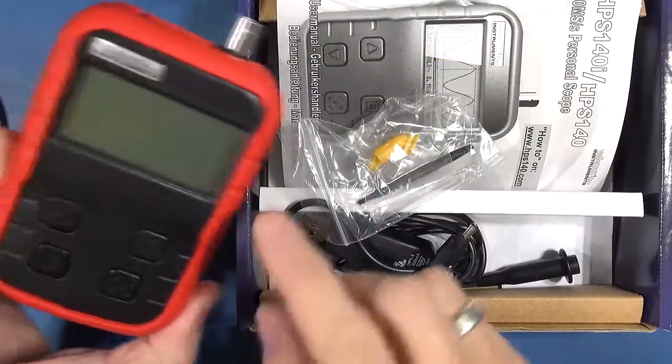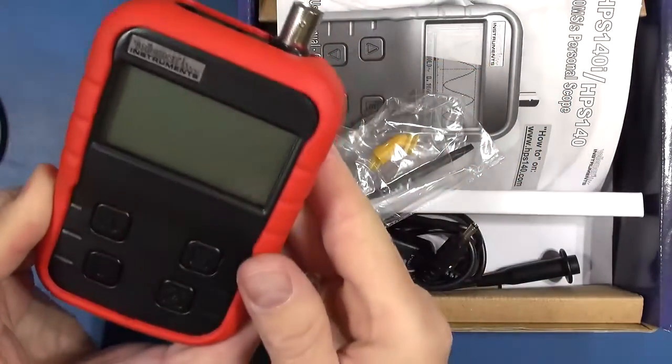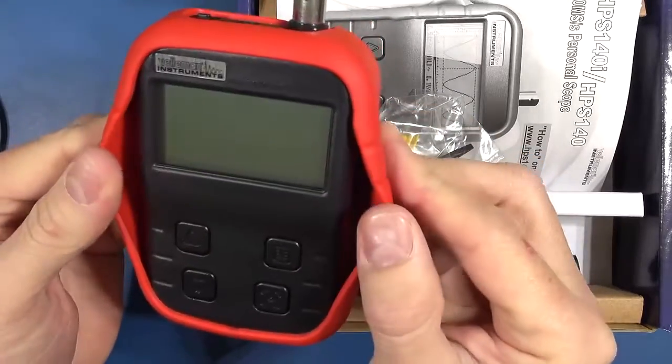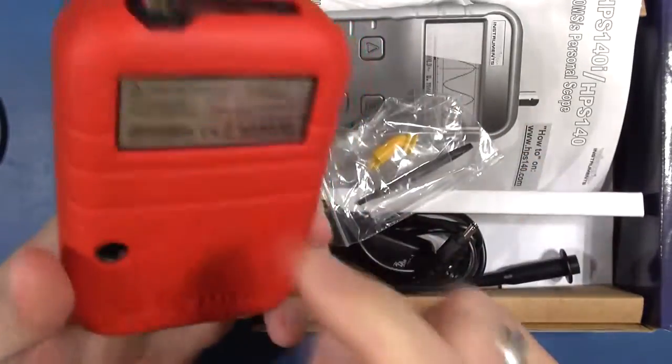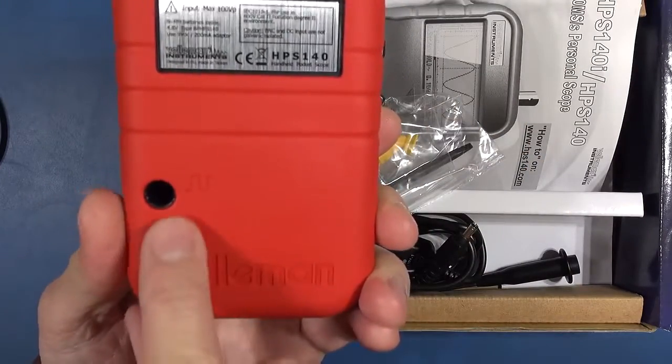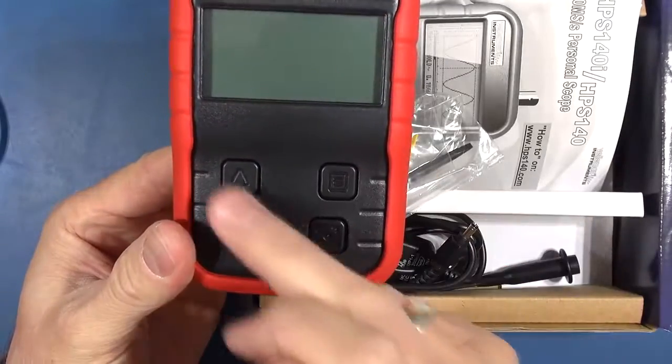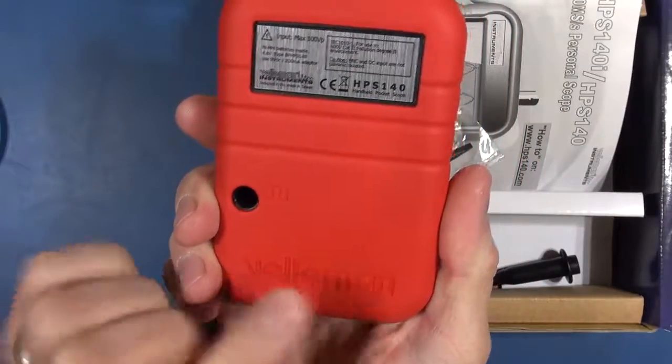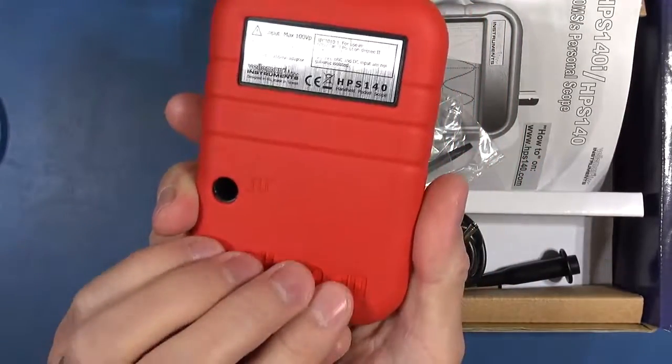What you get in the box is obviously the little pocket oscilloscope itself. It's got a nice red protective rubber jacket around it. It does have a test signal for a ten times probe. It has these four buttons which are used for navigating the features. There are screws in the back so you should be able to open it up and get to the battery pack.